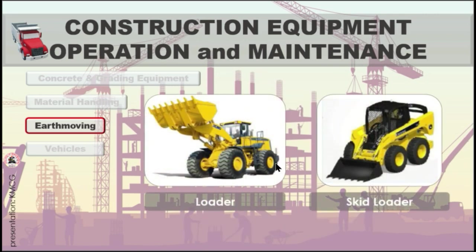Next, we have the loader and the skid loader. A loader is used extensively in construction work to handle and transport bulk material such as earth and rock, to load trucks, to excavate earth, and to charge aggregate bins at asphalt and concrete plants. A skid loader is a small rigid-frame, engine-powered machine with lift arms used to attach a wide variety of labor-saving tools or attachments. Skid steer loaders are typically four-wheel vehicles with wheels mechanically locked in synchronization on each side, and the left and right side drive wheels can be driven independently.